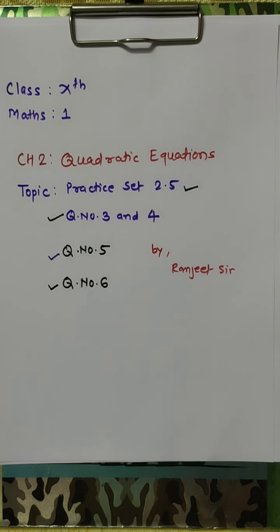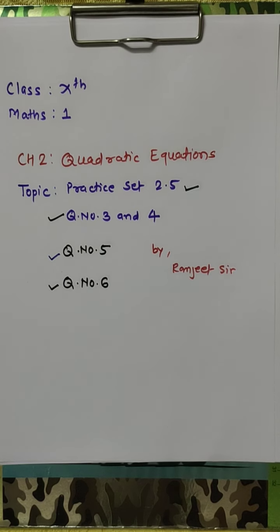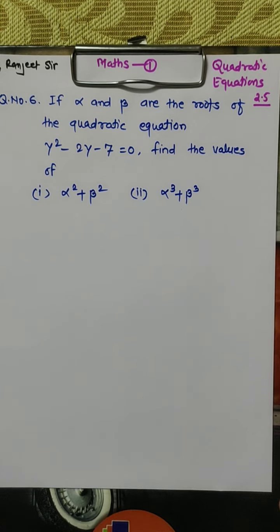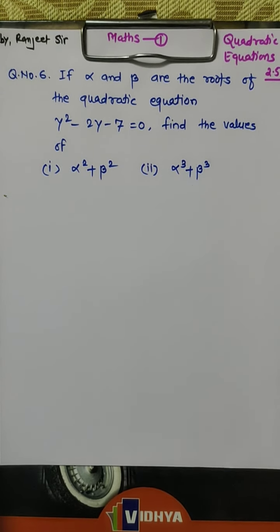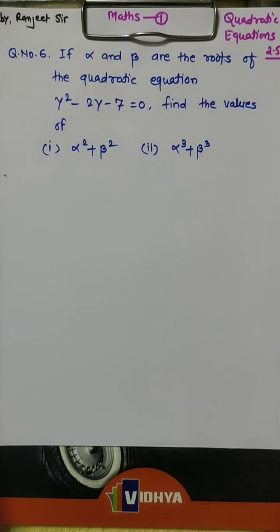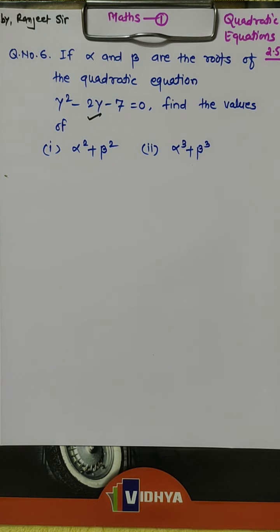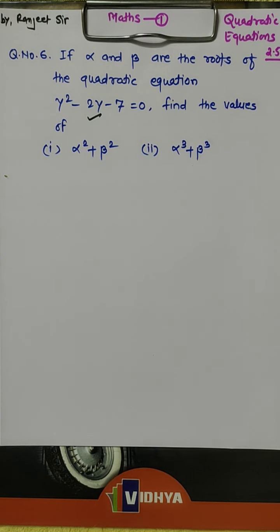Question number 6 is: if alpha and beta are the roots of the quadratic equation y squared minus 2y minus 7 is equal to 0, find the values of first, alpha squared plus beta squared, and second, alpha cubed plus beta cubed.